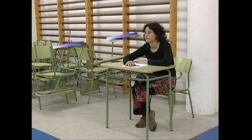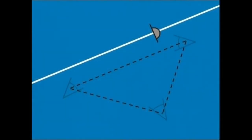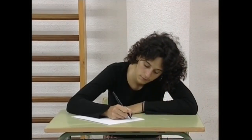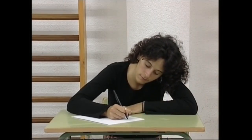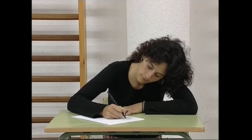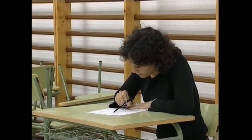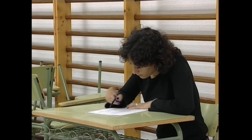Begiradaren norabideak emango digu beraz ekintzaren ardatzaren kokapena. Ardatz hori kokatu dugunean, triangelua osatzeko moduan gaude, eta haren arabera kamara kokatzen has gaitezke. Esan dugu aktorea tokian geldik egongo dela. Baina bertan dagoela, idatzi, irakurri, marrastu edo beste zerbait egin dezake, eta baita burua alde batera zein bestera mugitu ere. Kameraren kokapenetik, ekintza txiki horiek guztiak jasoko ditugu, ardatza zeharkatu gabe.